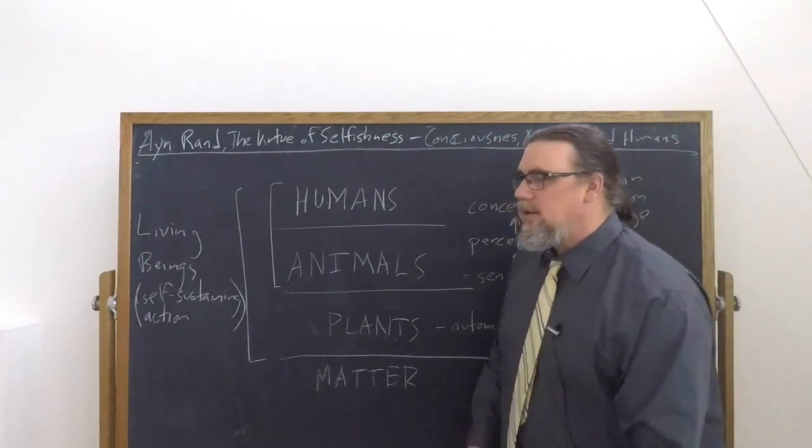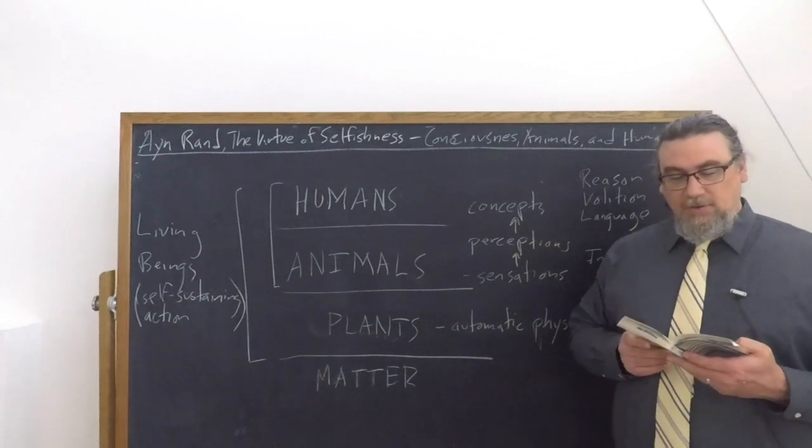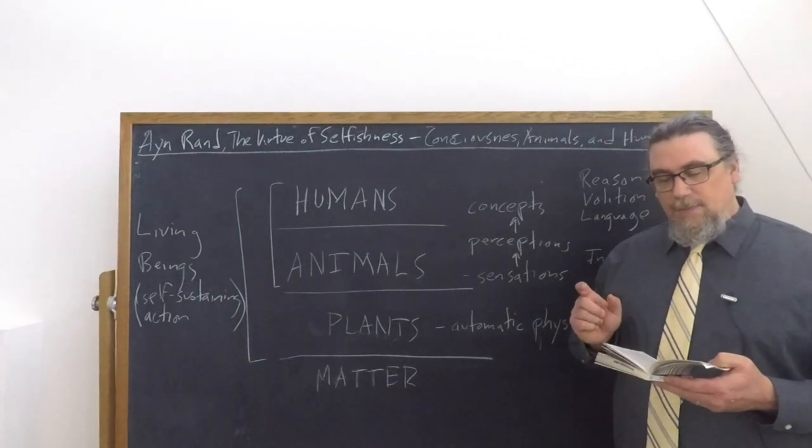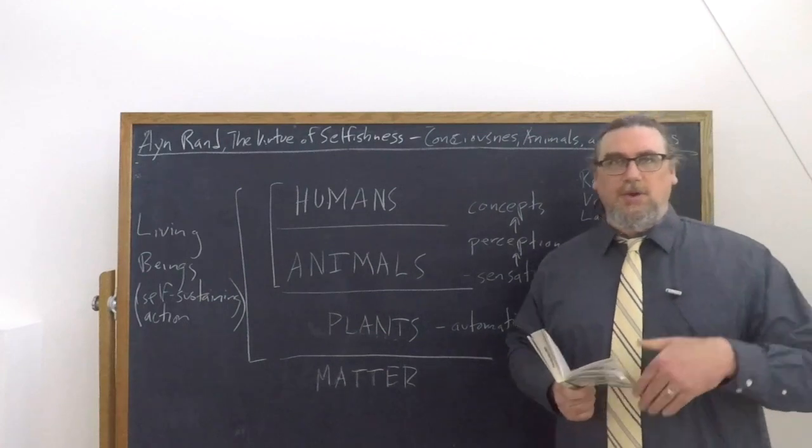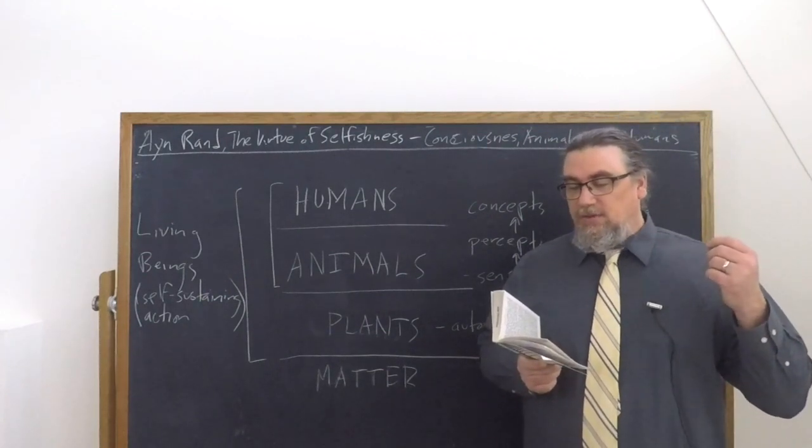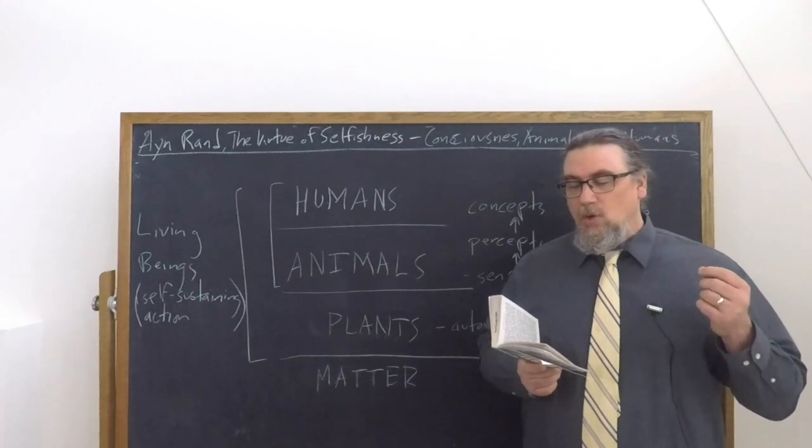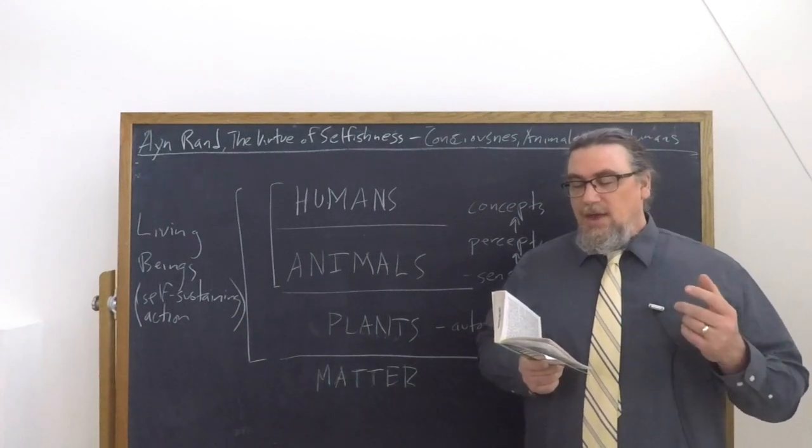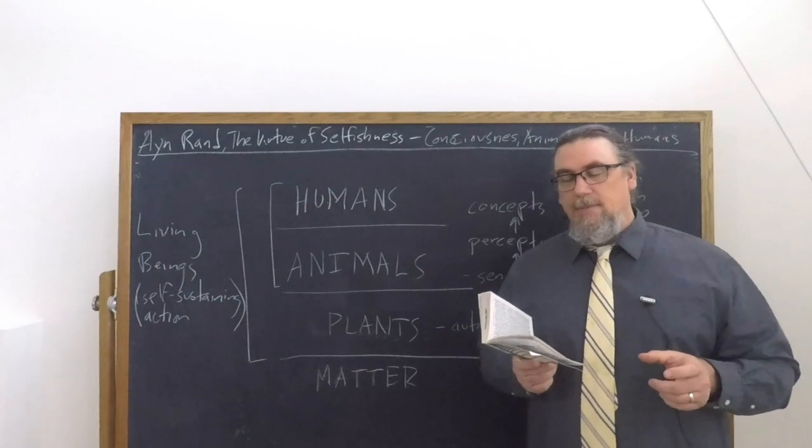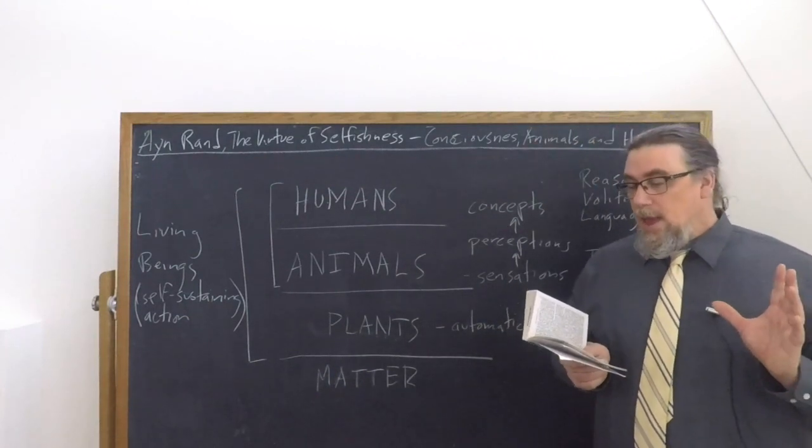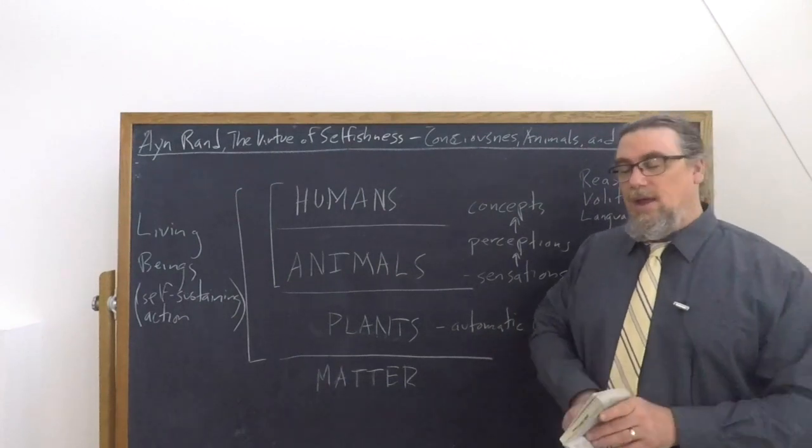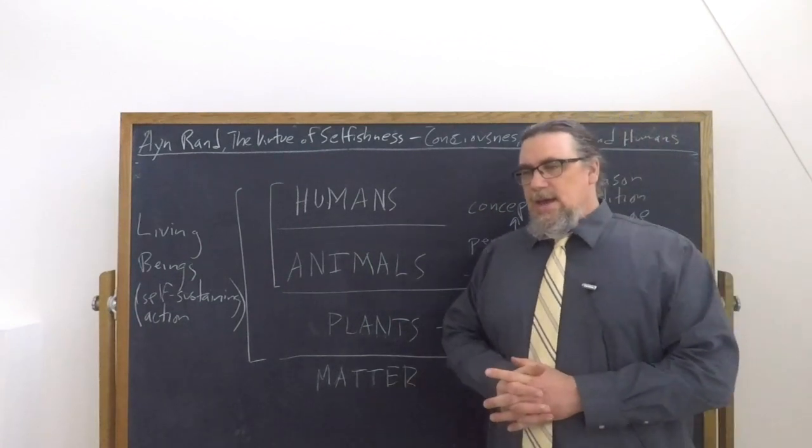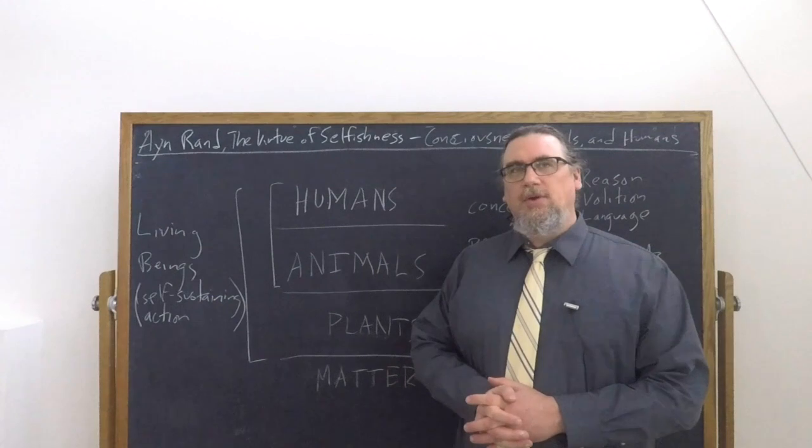A sensation is produced by an automatic reaction of a sense organ to a stimulus from the outside world. It lasts for the duration of the immediate moment as long as the stimulus lasts and no longer. She calls them an automatic response. And here's an interesting turn of phrase, an automatic form of knowledge. Now, if this is knowledge, it's knowledge in a very attenuated sense. So she says that a consciousness of this sort can neither seek nor evade them. And she goes on and she says, an organism that possesses only the faculty of sensation is guided by the pleasure pain mechanism of its body. And here she says, an automatic knowledge and an automatic code of values.